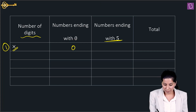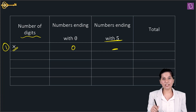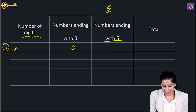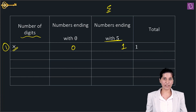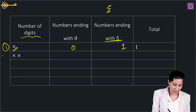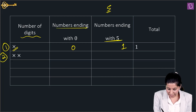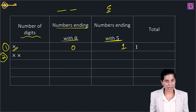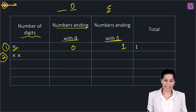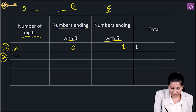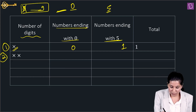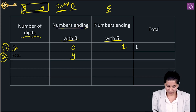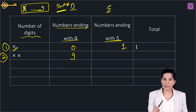For 2-digit numbers ending with 0: fix 0 at the last place, the first digit can be any of 9 digits (1–9) — so 9 numbers. For 2-digit numbers ending with 5: fix 5 at the last place; the first digit cannot be 0 or 5, so 8 options. Total 2-digit numbers divisible by 5: 9 + 8 = 17.